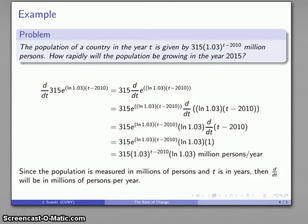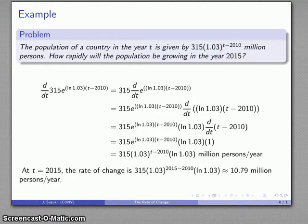Our t-value, 2015, is the year we're looking at. So t = 2015. We can compute, substitute those in, and after all the dust settles, 10.79 million persons per year.